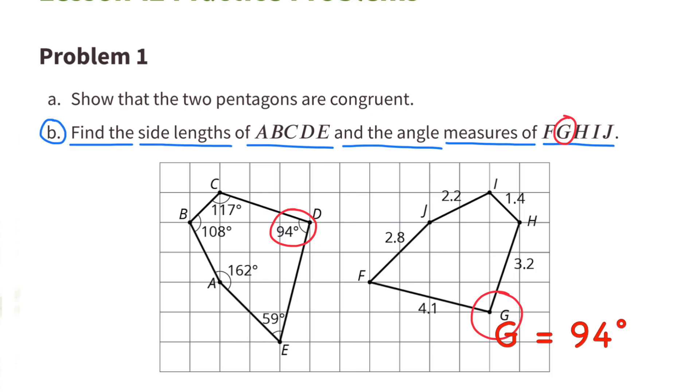Angle G is 94 degrees. Angle H is 117 degrees. Angle I is 108 degrees. And Angle J is 162 degrees.